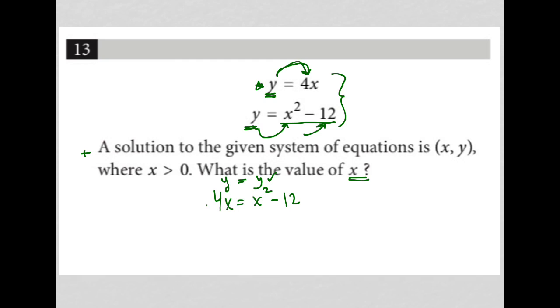So 4x equals x squared minus 12. Now I'm going to subtract 4x to bring it over to the right-hand side so that I have a trinomial equal to 0. So I'd have 0 equals x squared minus 4x minus 12.